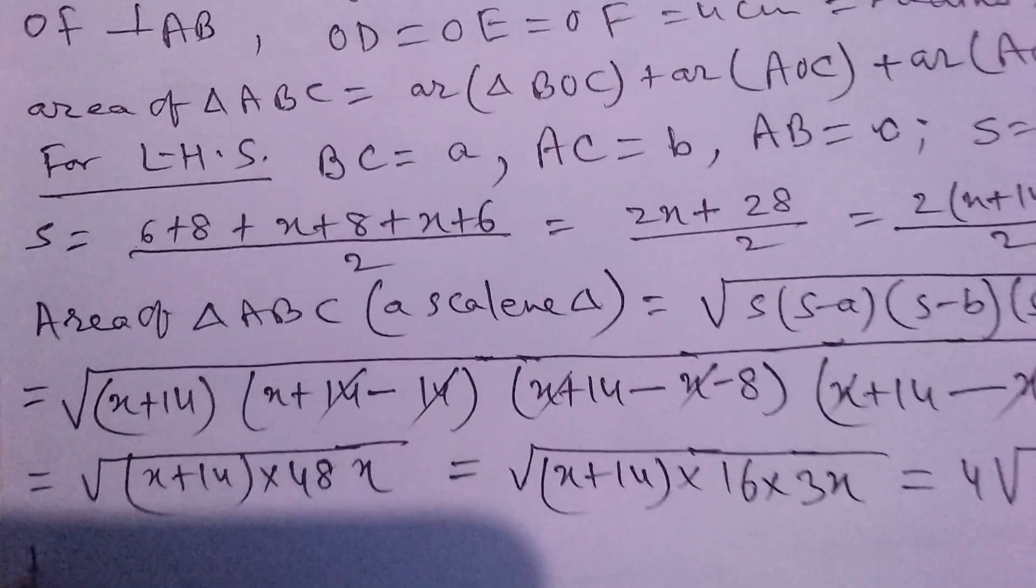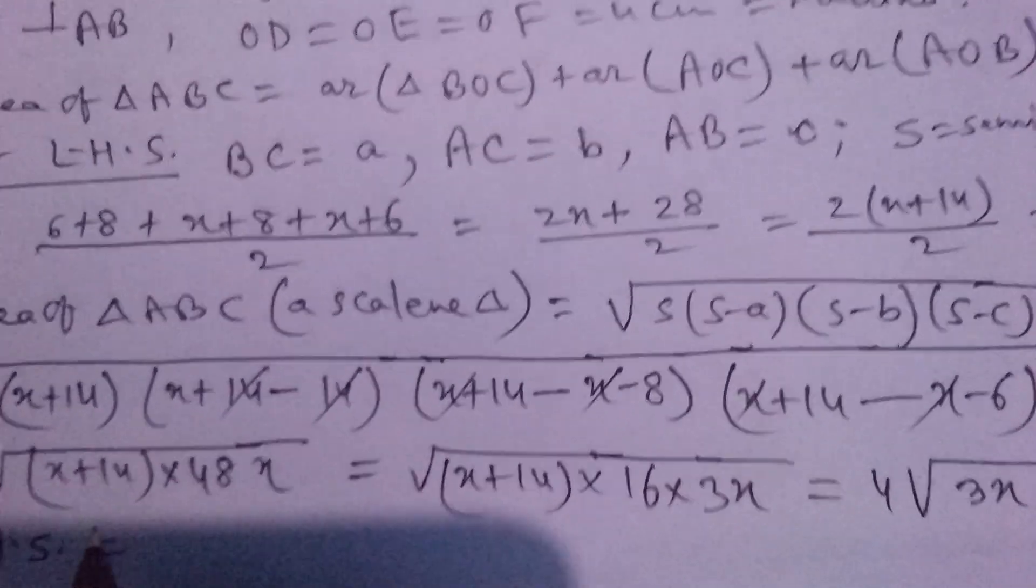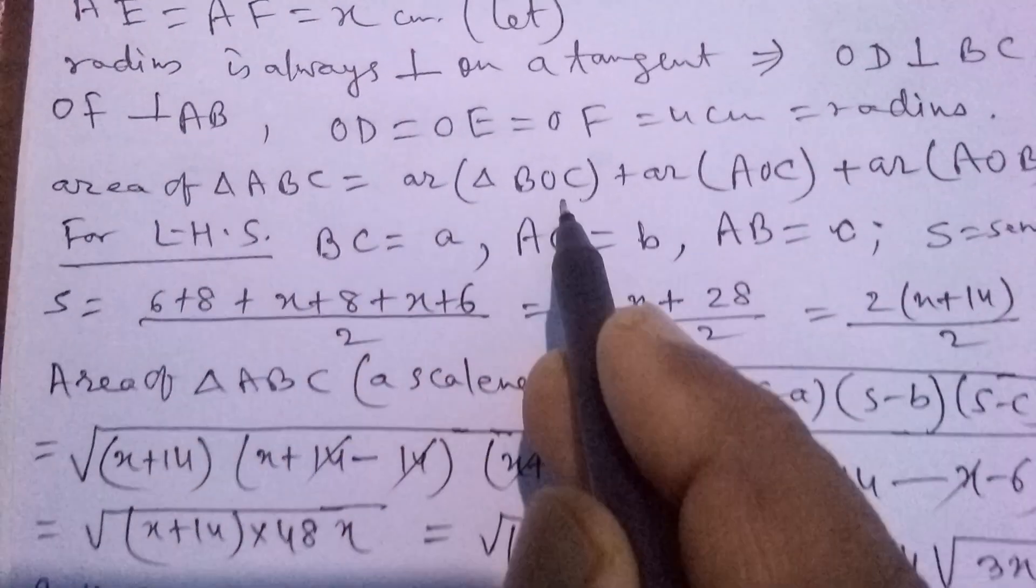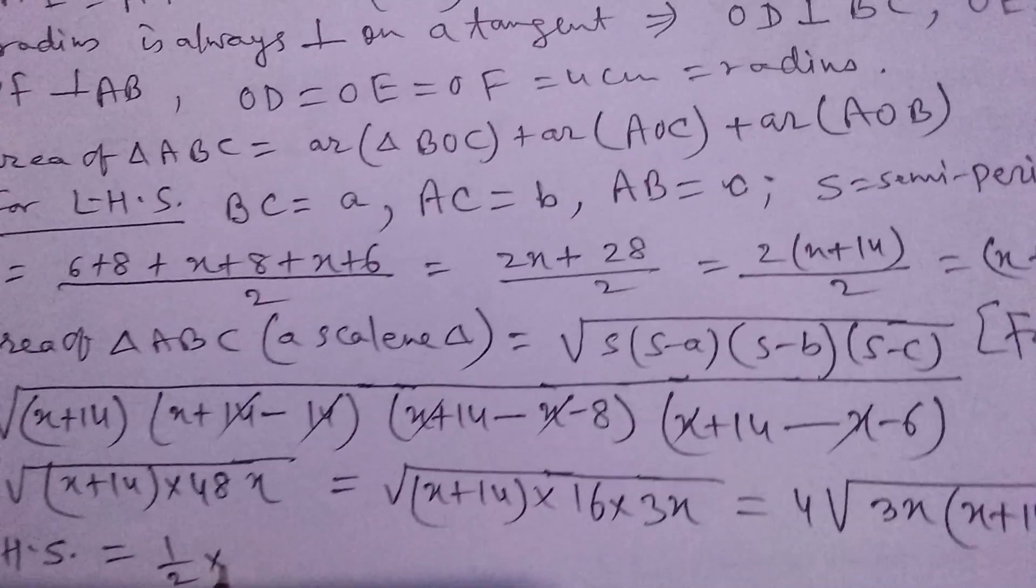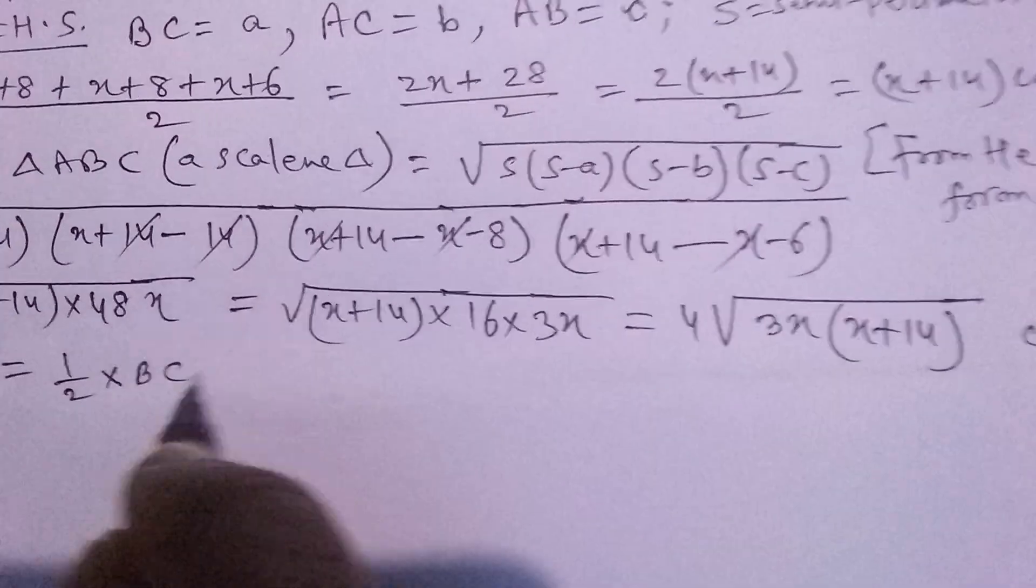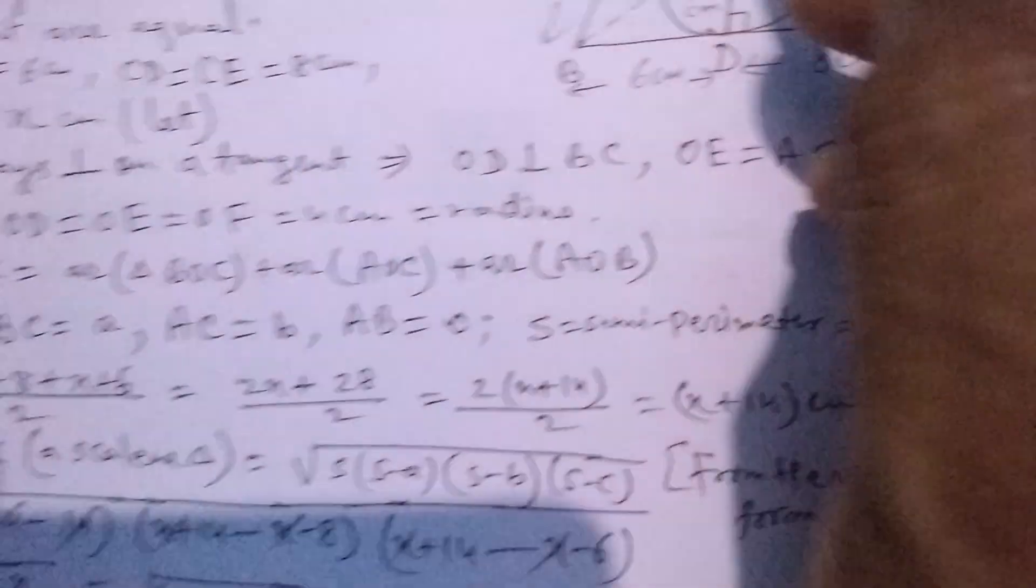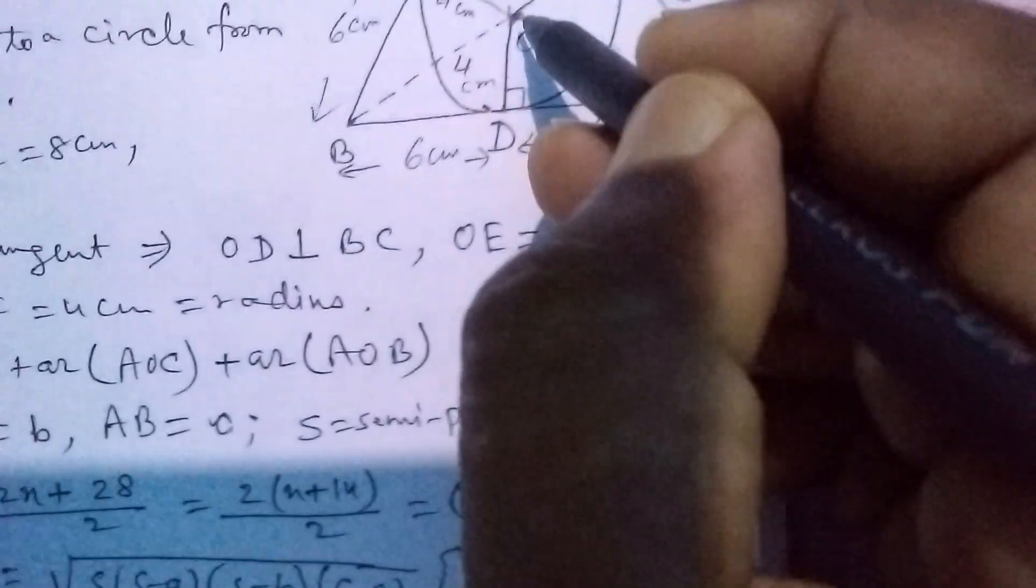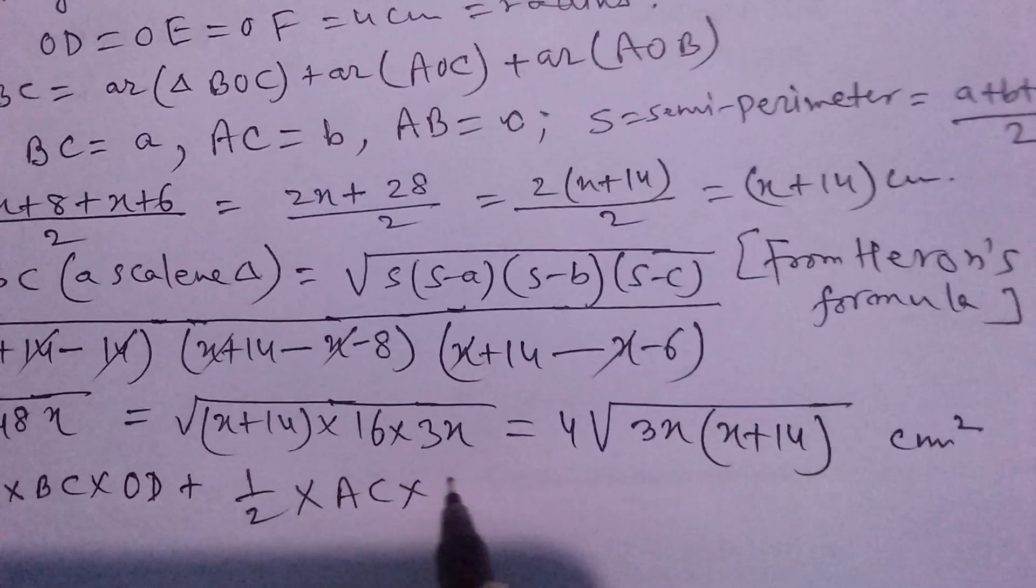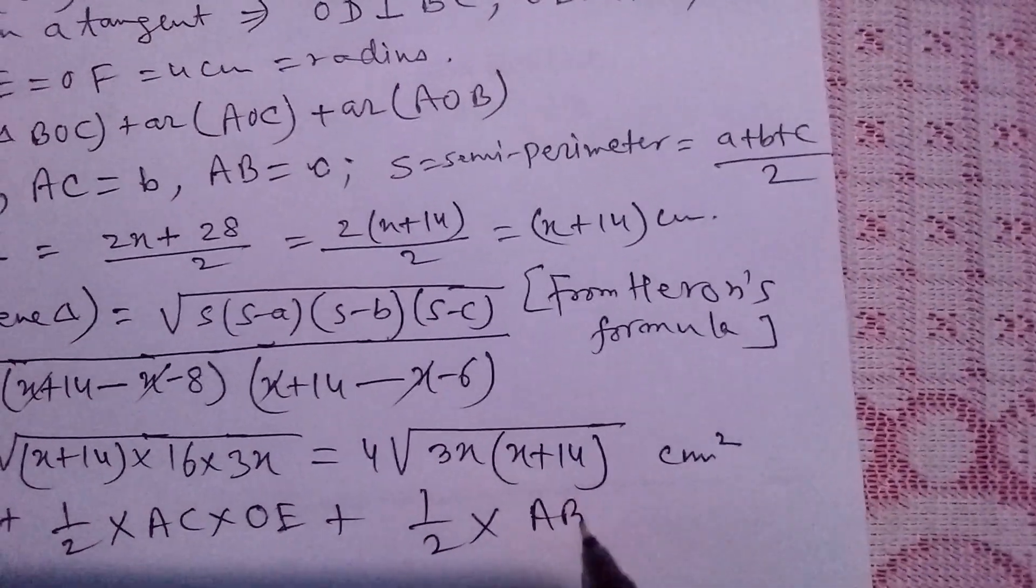Now we find RHS. Area of triangle BOC equals half times base times height. In BOC, base is BC and height is OD, so (1/2)BC·OD. Plus (1/2) area of triangle AOC where AC is base and OE is height, so AC·OE. Plus area of triangle AOB where AB is base and OF is height, so AB·OF.